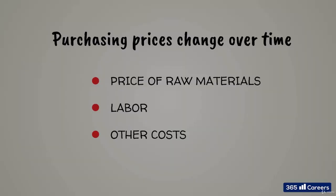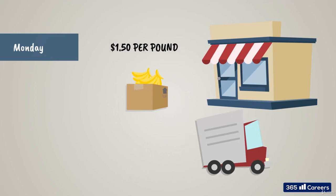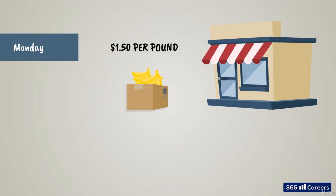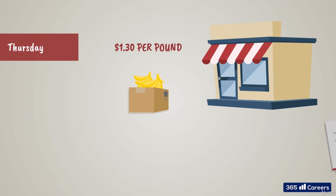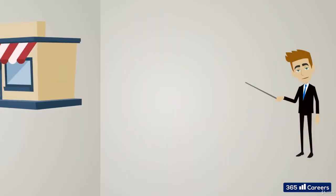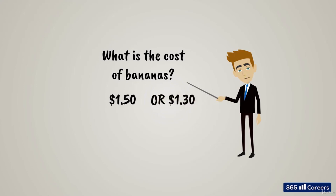Let's provide an easy-to-understand example. You own a shop selling fruits and vegetables. On Monday, your supplier brings in bananas that cost $1.50 per pound. And on Thursday, he comes in and tells you they have received a new shipment and he can sell you bananas at $1.30. That's a great deal, so you agree, even though you still have bananas that cost $1.50 in your warehouse. What happens when a client buys bananas from you on Friday and you have both $1.50 and $1.30 bananas in your warehouse? What is the cost of these bananas?